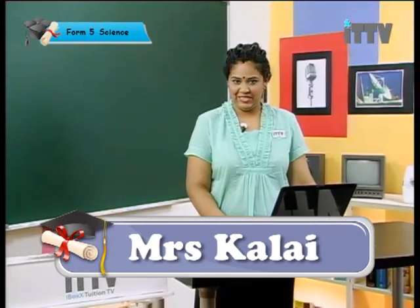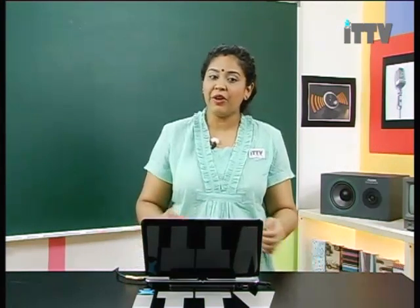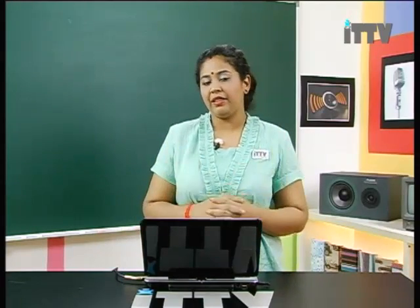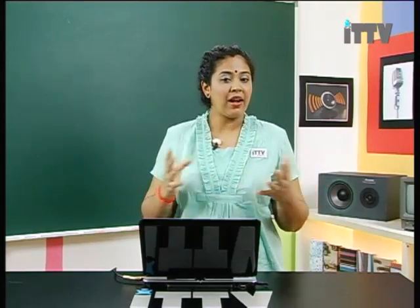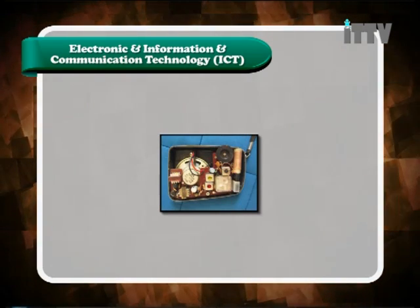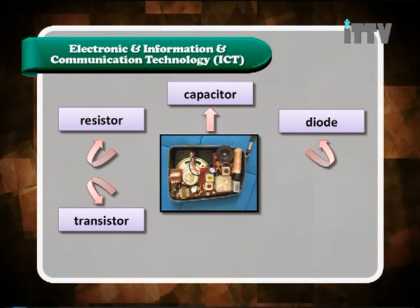Hello students, welcome to IT TV. Today we are going to learn radio communication. Radio is used as a form of communication system — it gives us entertainment and also important news. The radio we have in our house is a device comprised of a lot of electronic components inside. Today's lesson covers all the electronic components inside the radio. The electronic components in a radio are: resistor, capacitor, diode, transistor, inductor, and transformer.